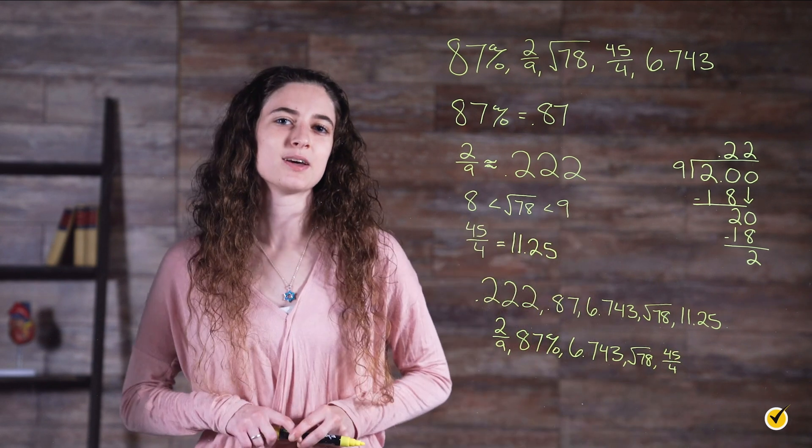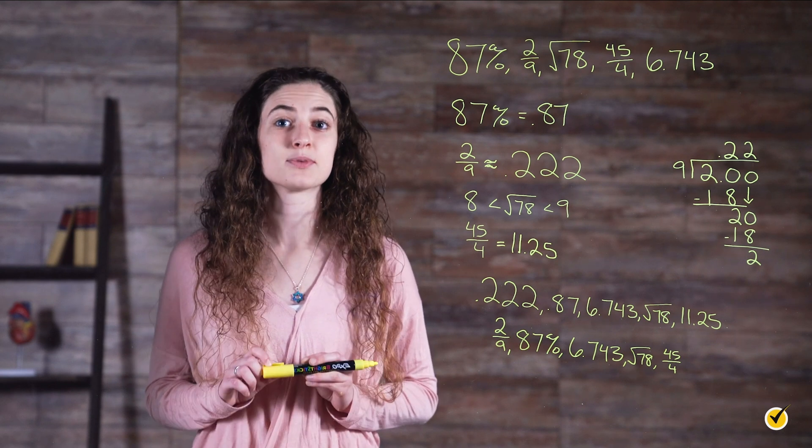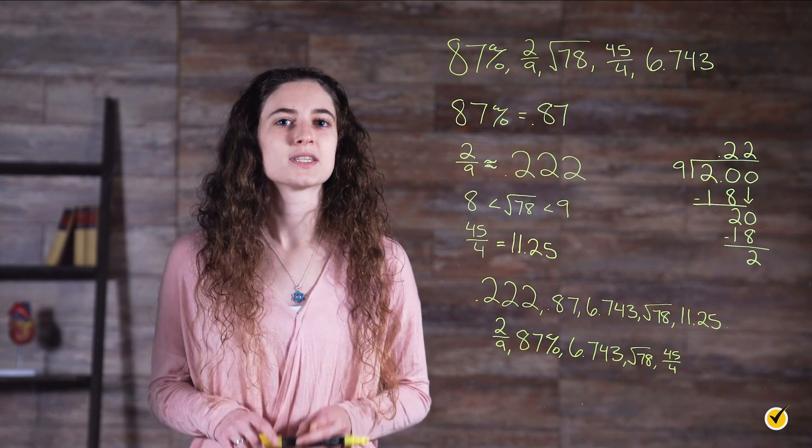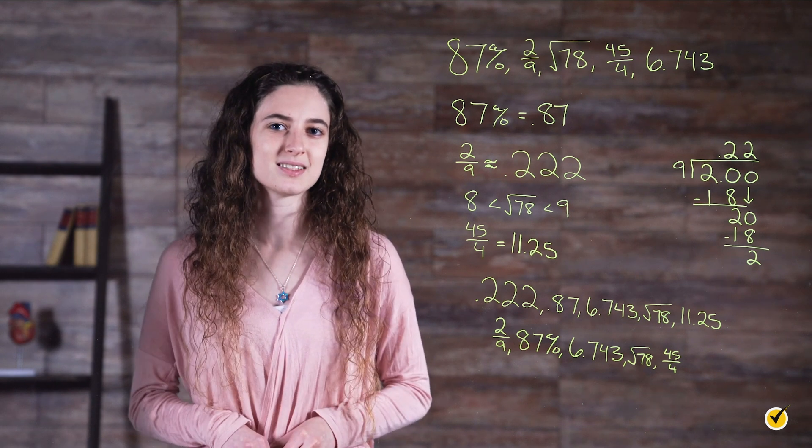If you were asked to put these numbers in order from greatest to least, you would follow all the same steps, except at the very end, order them opposite to how we did in this example. So 45 over four would be first, and two ninths would be last.